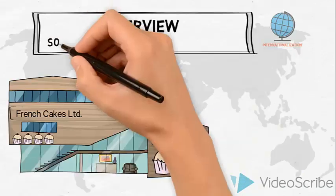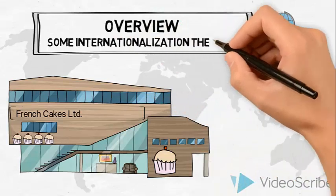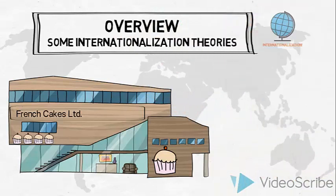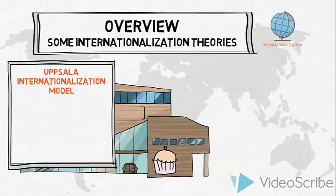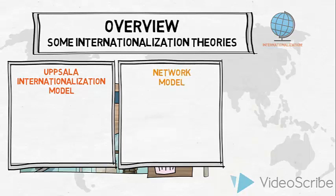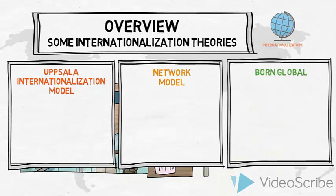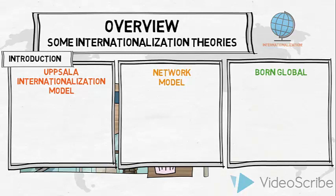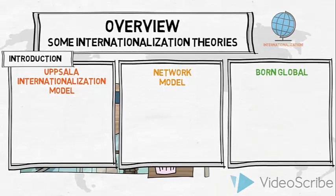Let us start with an overview of some of the internationalization theories used by marketers. Here we will list three selected theories: the Uppsala Internationalization Model, the Network Model, and the Born Global. Now let us continue with a brief introduction which will provide us with a basic understanding of these three different theories.